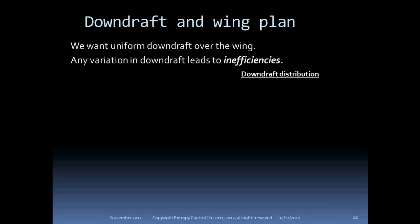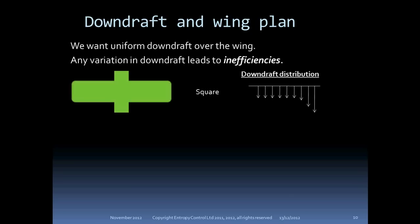The wing shape also affects the downdraft and hence the induced drag. Ideally you want a perfectly uniform downwash behind the aircraft. It makes sense that if the downdraft varies all over the place, the wing will be less efficient than if the downdraft is uniform. That is a function of the wing shape, mostly the planform. First, let's take a square wing planform, like the Hershey bar wing on the early Piper Cherokee range of aircraft. For a square wing, the downdraft is relatively low in the centre and increases towards the wingtips. This is not ideal from an induced drag point of view, but it does give really good handling characteristics.